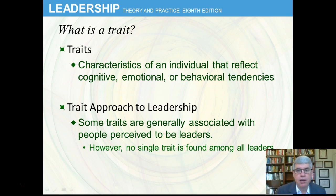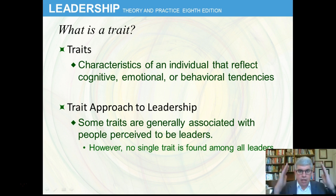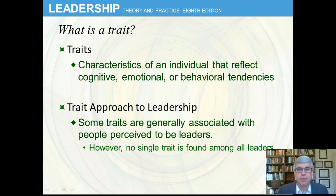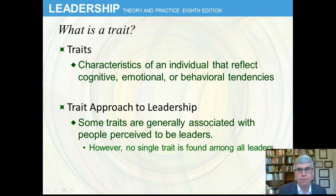Traits are characteristics of an individual that reflect either cognitive, emotional, or behavioral tendencies. Cognitive means the way that we think — is somebody a good problem solver? Do they think clearly? Can they calculate the consequences of something?